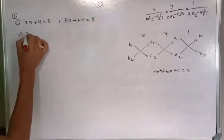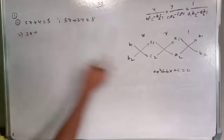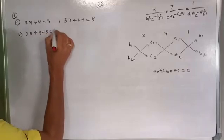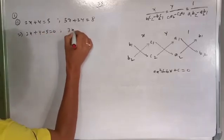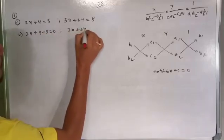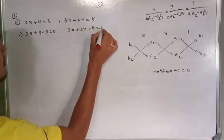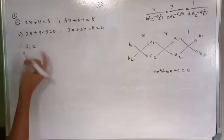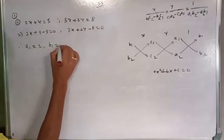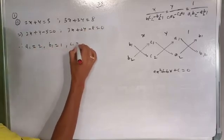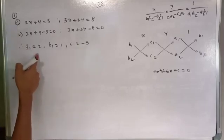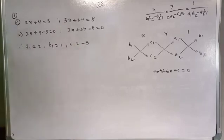The equations are 2x + y = 5 and 2x + 2y = 8. We rewrite them as 2x + y - 5 = 0 and 2x + 2y - 8 = 0. Therefore, a1 = 2, b1 = 1, c1 = minus 5.